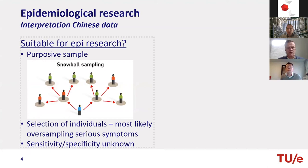Another issue, especially in the beginning, was the sensitivity and specificity of the tests. Some tests had only 70% sensitivity, which is not a very high number. Based on this, you could say maybe we should stop doing research on this dataset because it doesn't satisfy all the requirements we usually like to have on sample data.